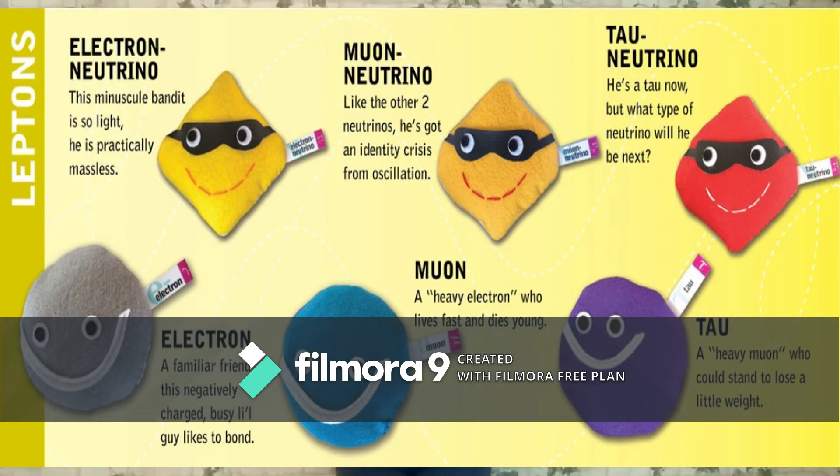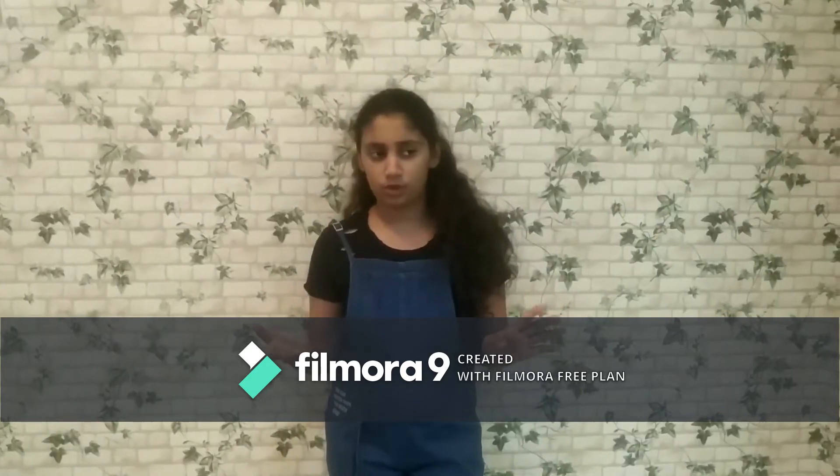If they're both fermions, quarks and leptons, then how are they different from each other? They are different from each other by their colour charge.